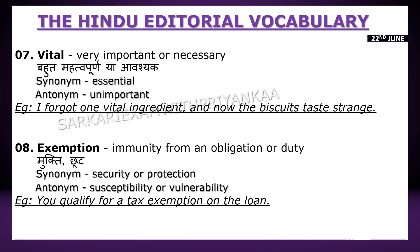The next one is 'exemption'. Exemption ka matlab hota hai mukti, chut — yani immunity from an obligation or duty. Synonym: security or protection. Antonym: vulnerability. Example: 'You qualify for a tax exemption on the loan.'